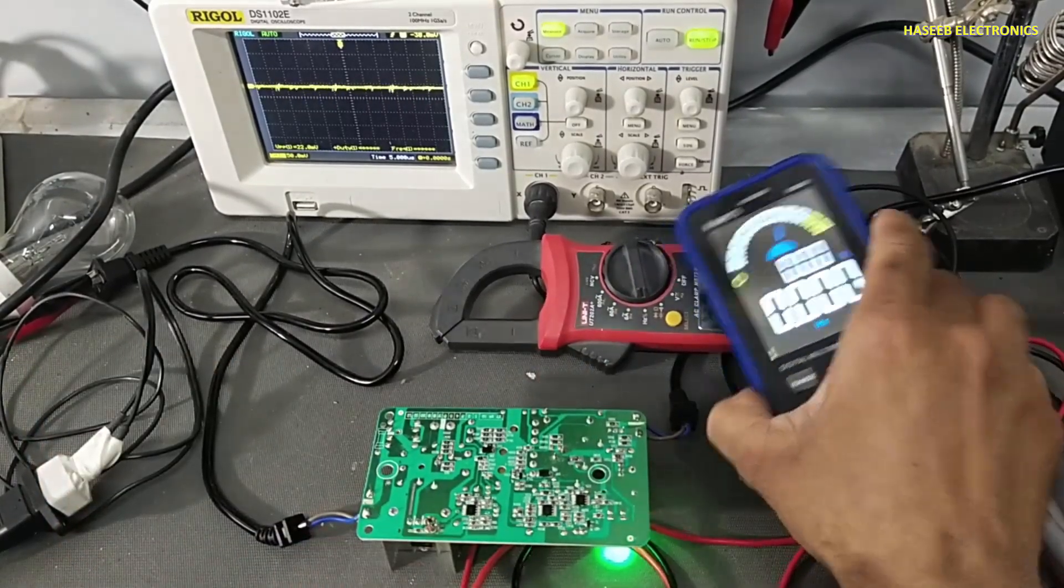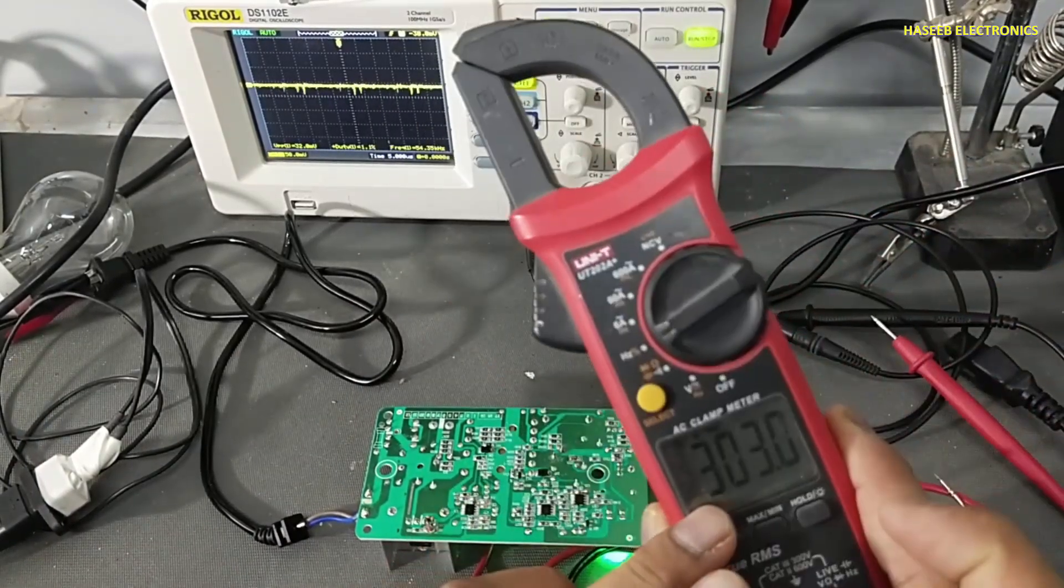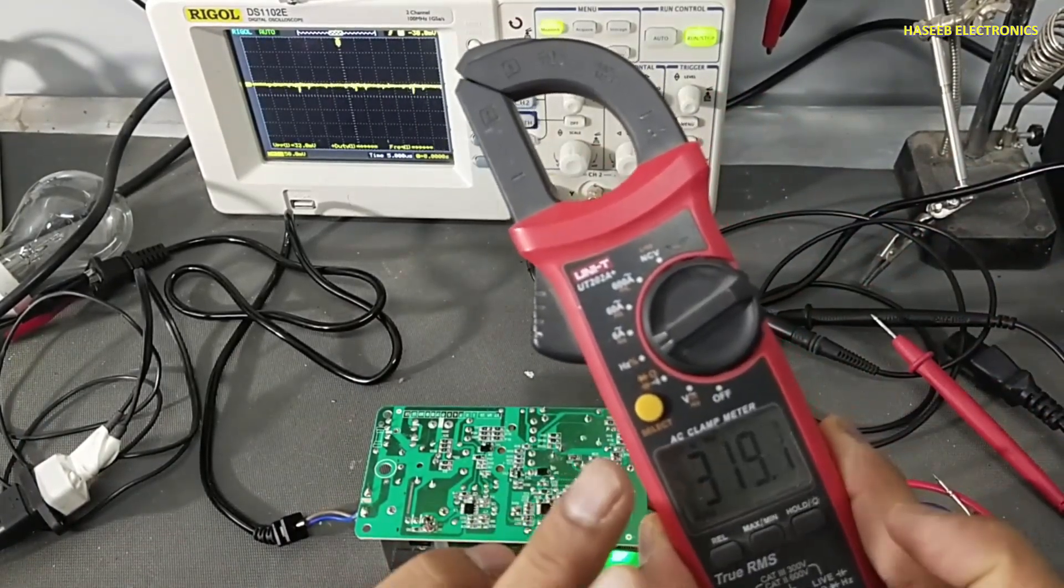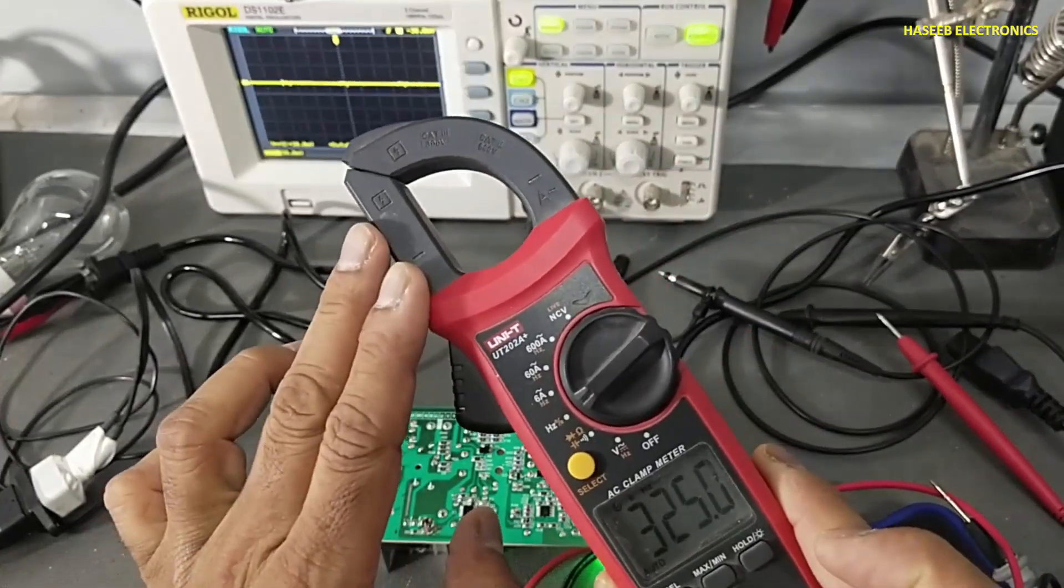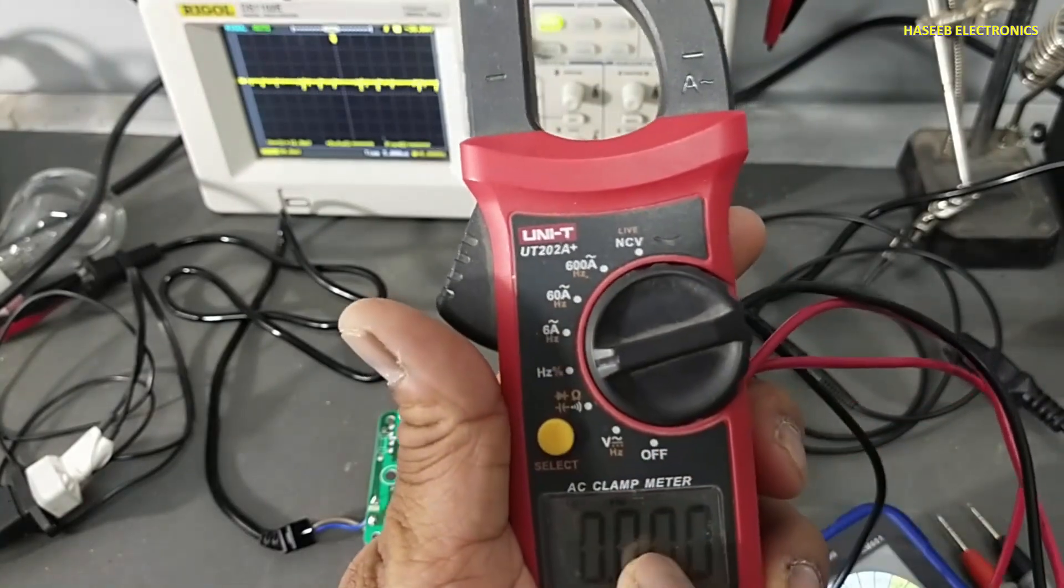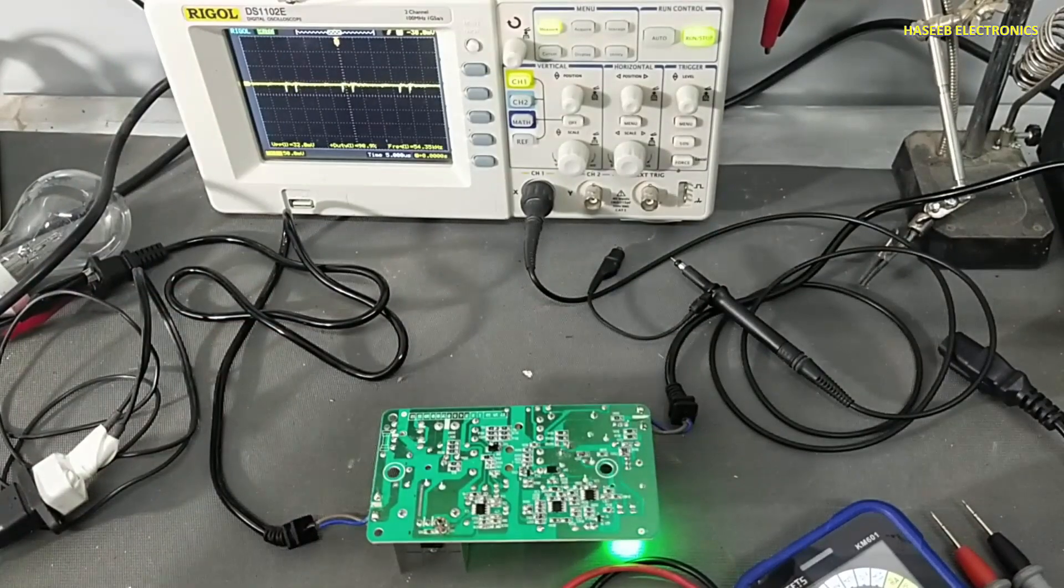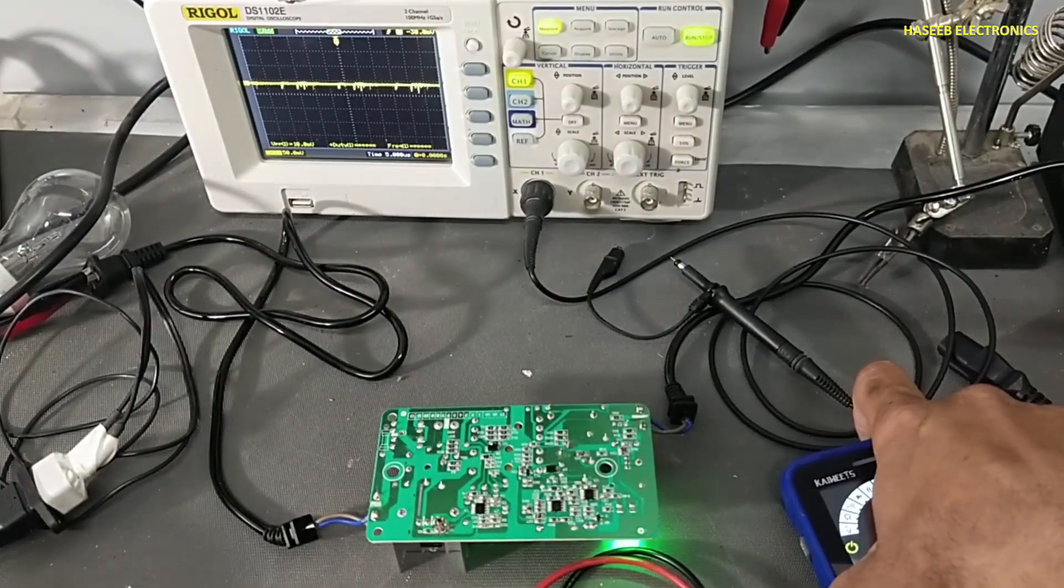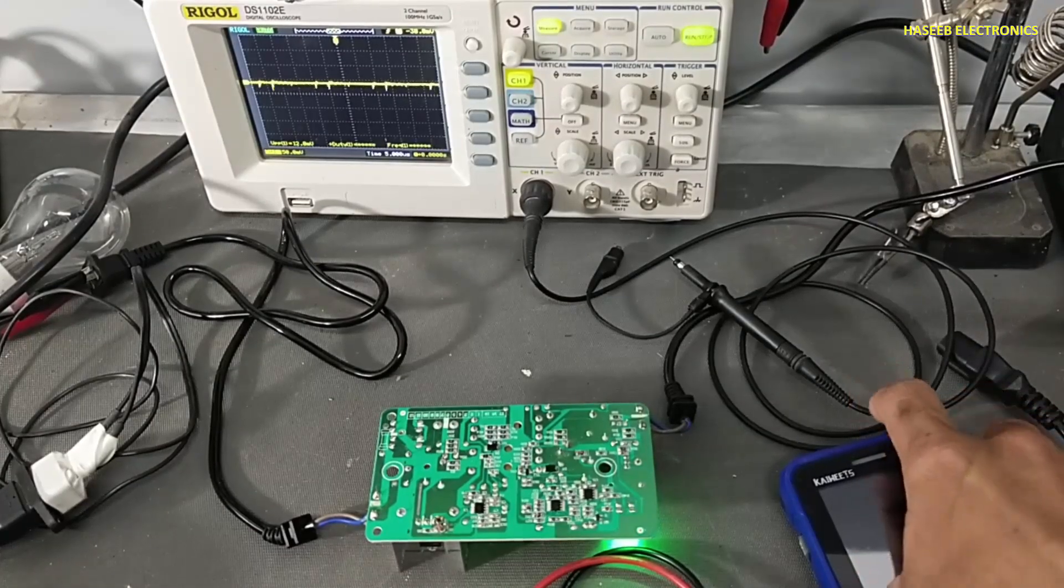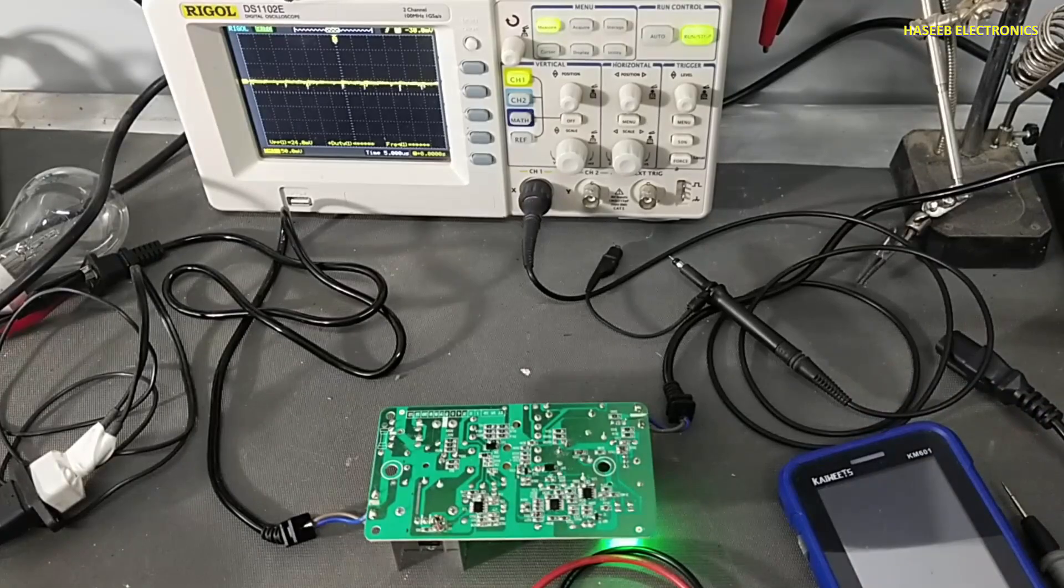So that is why I always use this multimeter for frequency and duty cycle, and sometime I use for current measurement. This is my special multimeter for frequency measurement for switch-mode power supplies and switching circuits. I hope this video is informative. If it is informative, hit the like button. If you have any question, please write in the comments. Thanks for watching. Assalamualaikum warahmatullahi wabarakatuh.